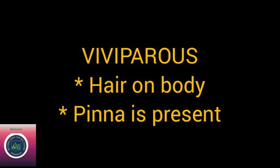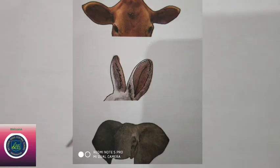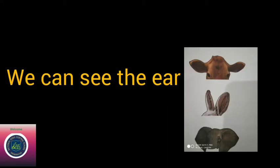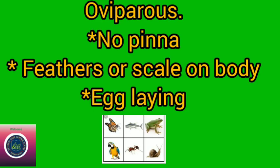Viviparous animals have hair on their body, and pinna is present in such animals. Do you know what is pinna? The external ear is called pinna — you can see the ears of them.